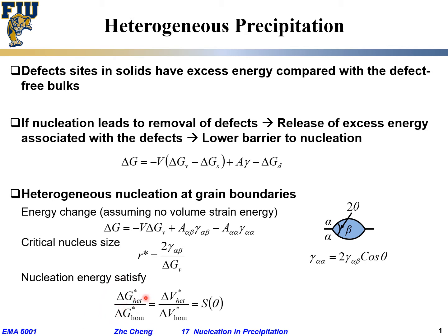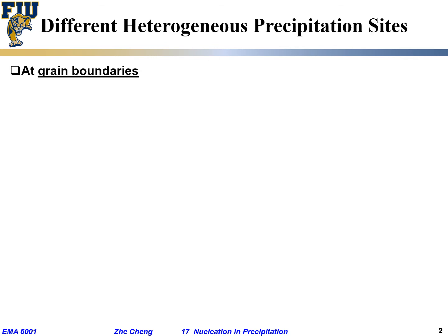Similar to solidification, we can get the ratio between heterogeneous and homogeneous nucleation. We treat the nucleus as a sphere cap, where the ratio is the sphere cap volume divided by the total volume. The sphere cap volume is a function of theta — the so-called wetting angle — which is the same approach we dealt with before.